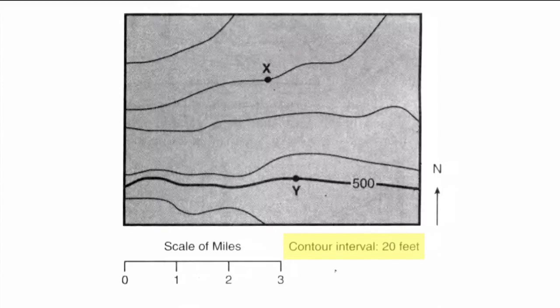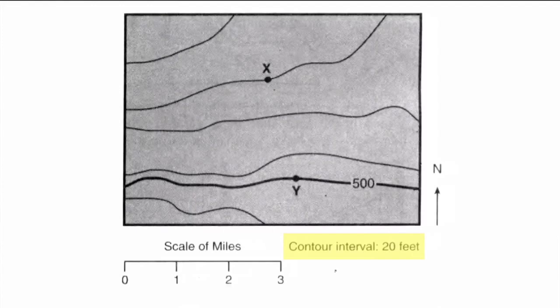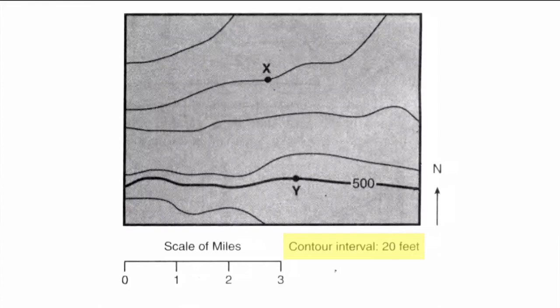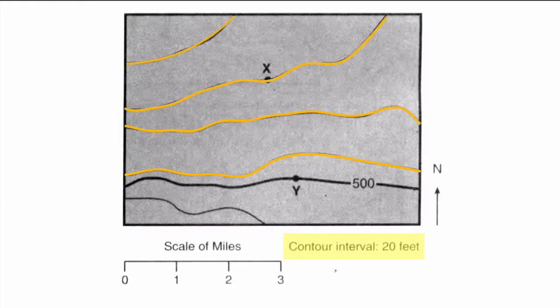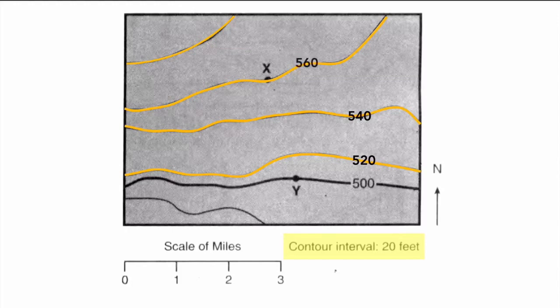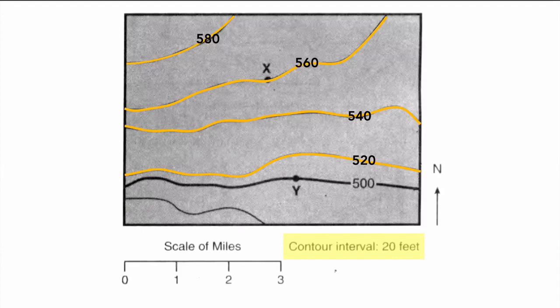According to the contour interval here, each line is incrementally different by 20 feet. Now contour lines are not evenly spaced from one another, so knowing the contour interval can help fill in the lines not showing. We are given an index contour, that's the 500. Using the contour interval and the index contour, the other lines would be 520, 540, 560, and 580, because we're increasing by 20 feet, showing different elevations as I move up the map.